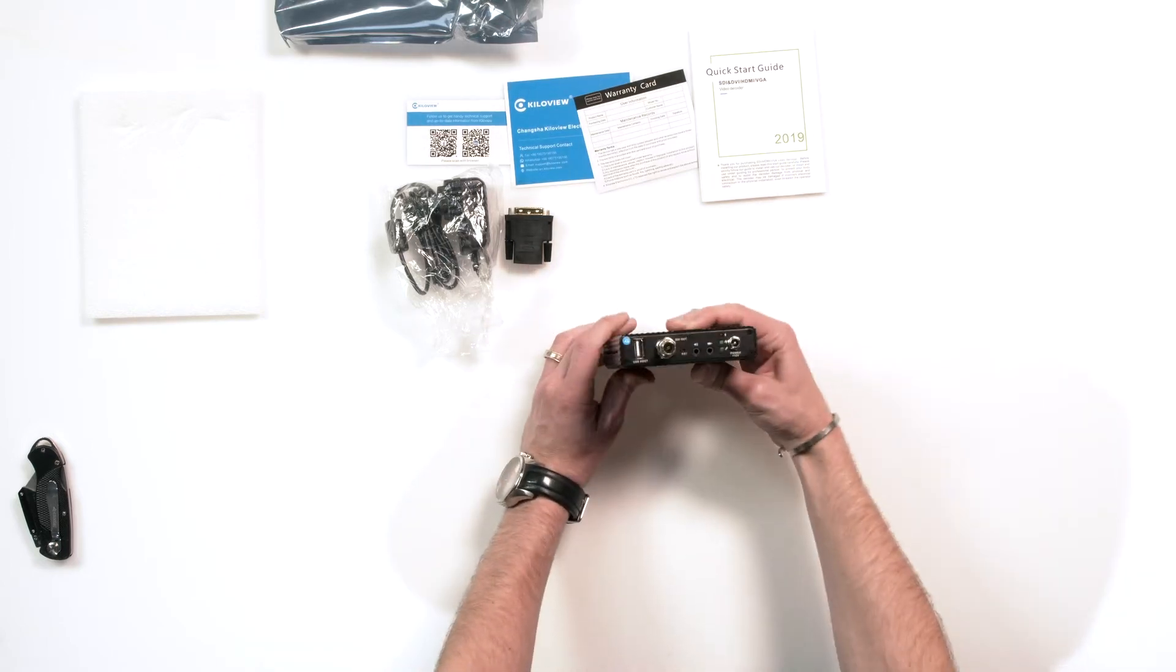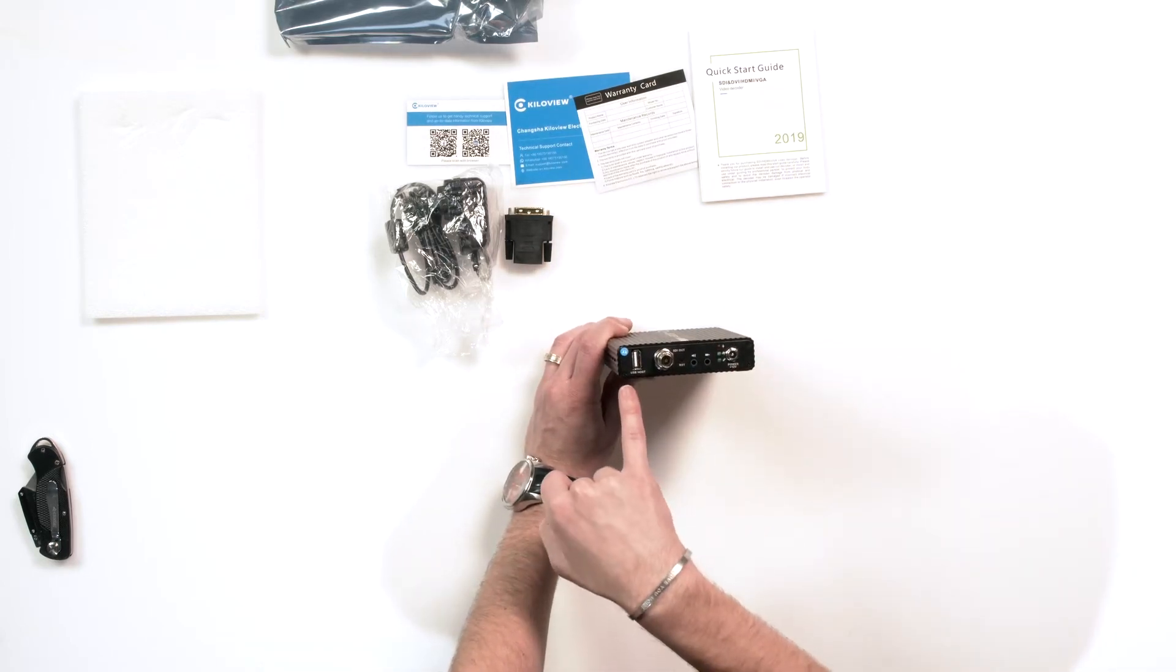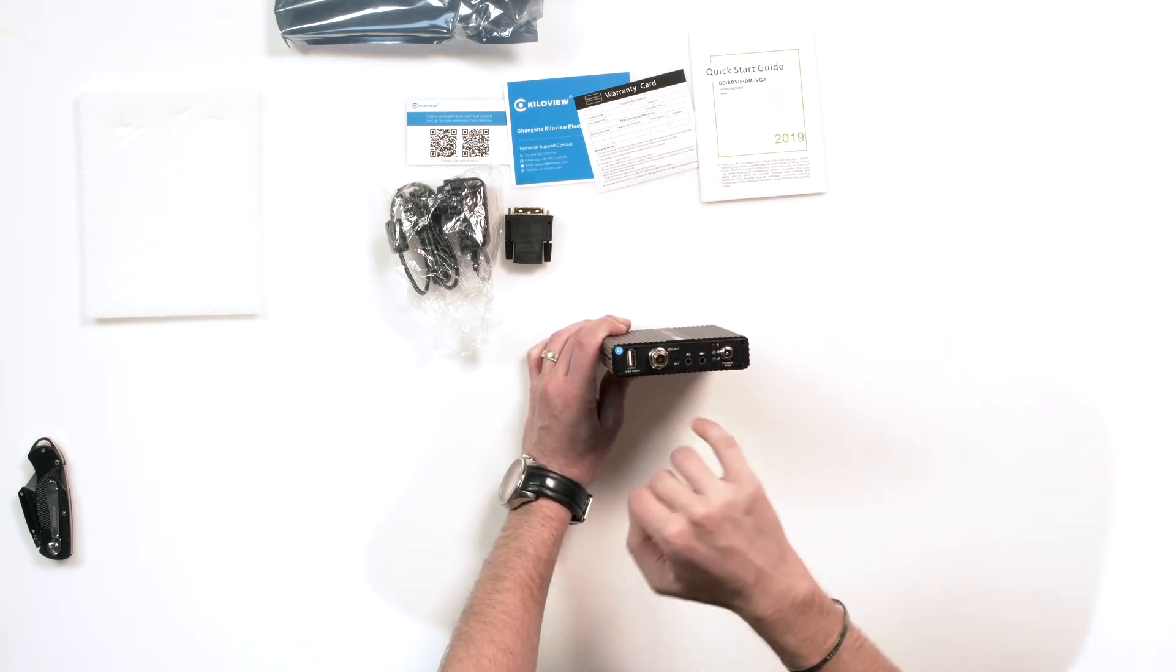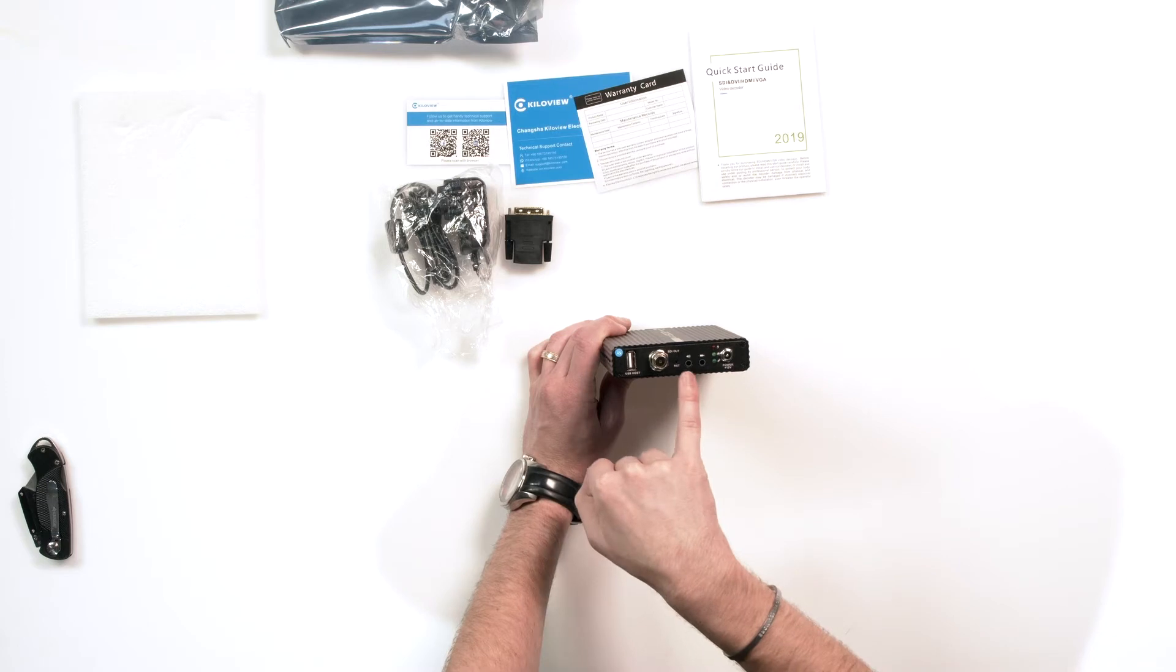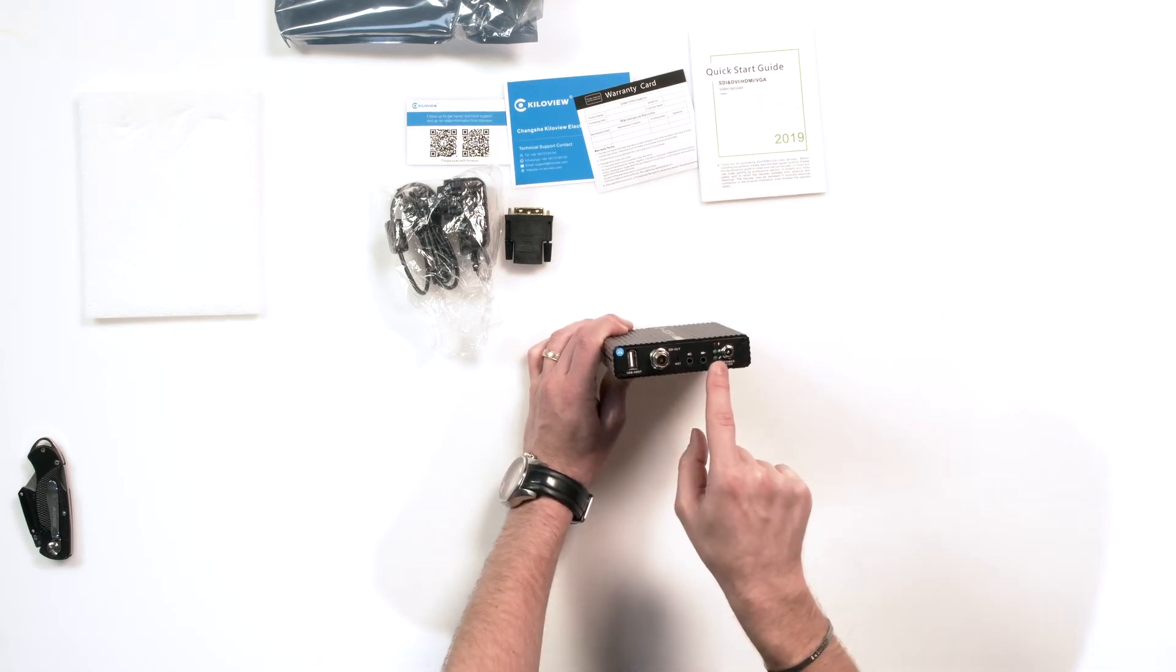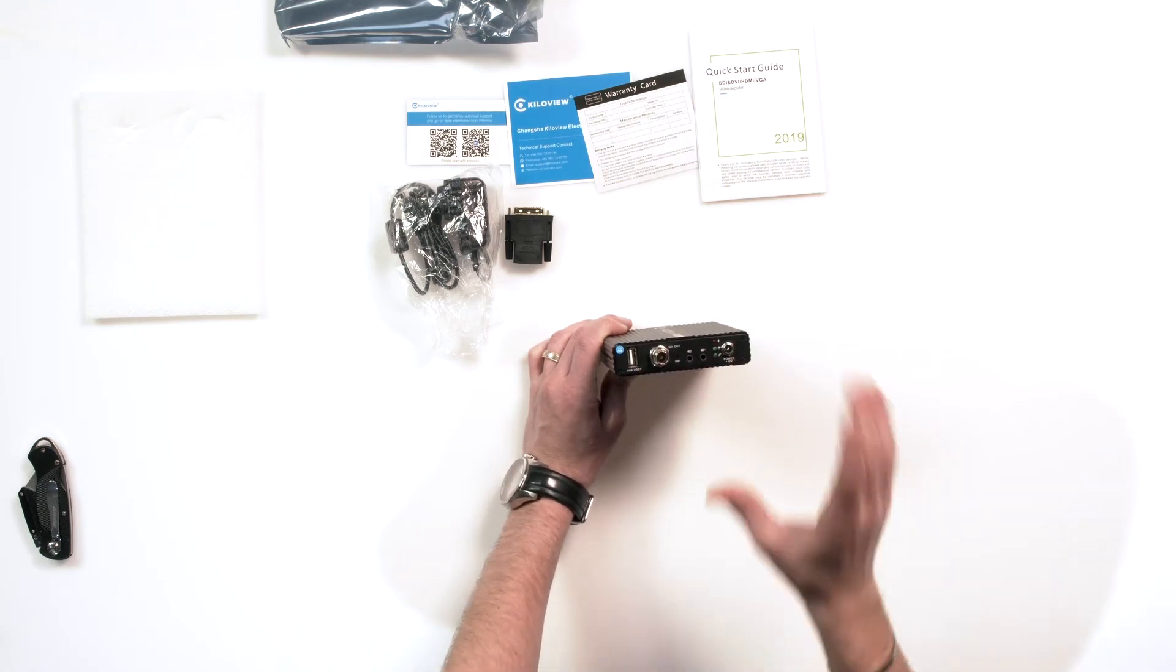And then if we flip it over, you have your USB port, most likely just for data or information. You have your SDI out, audio—this is another audio 3.5 millimeter—and your power with your indicator lights.